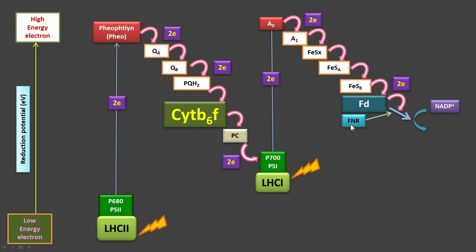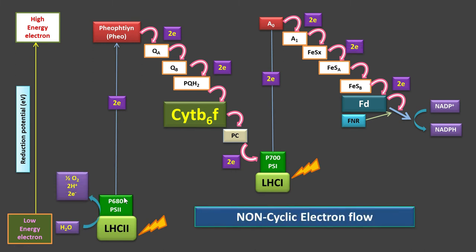Ferredoxin, with the help of the FNR enzyme — ferredoxin-NADP reductase — receives NADP⁺, takes two protons and two electrons, and converts it to NADPH. The electron ejected from PS1 ultimately comes back as it reduces NADP⁺. However, the electron released from P680 does not come back — it is taken by NADP⁺ to produce NADPH. This creates an electron hole or electron deficit at PS2/P680.